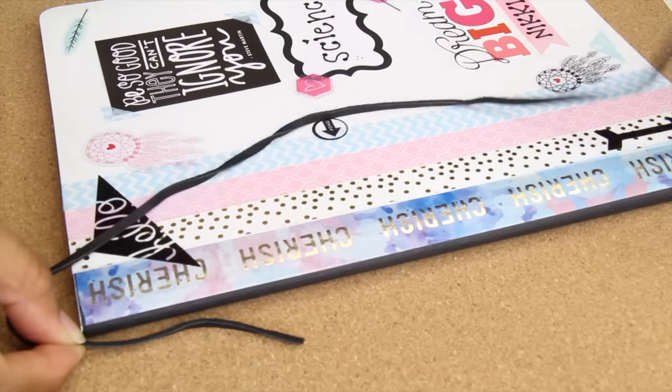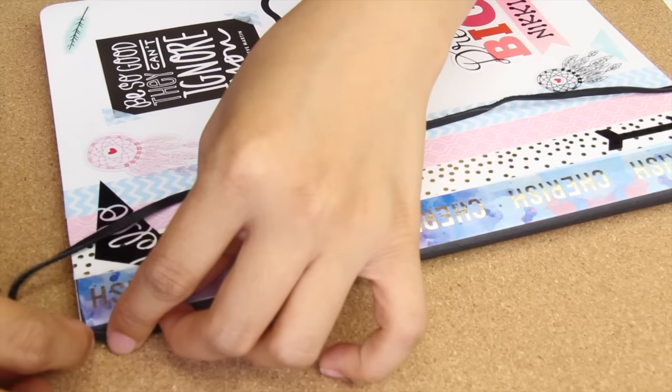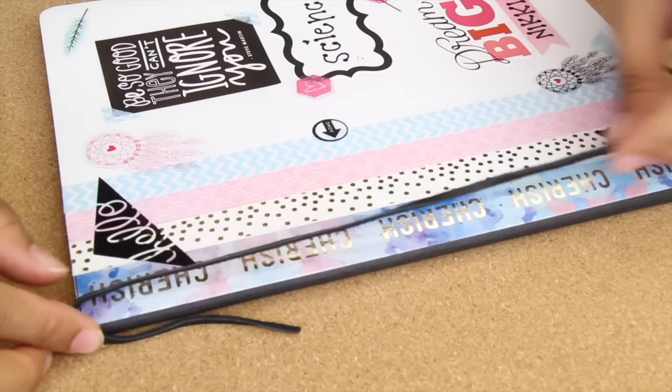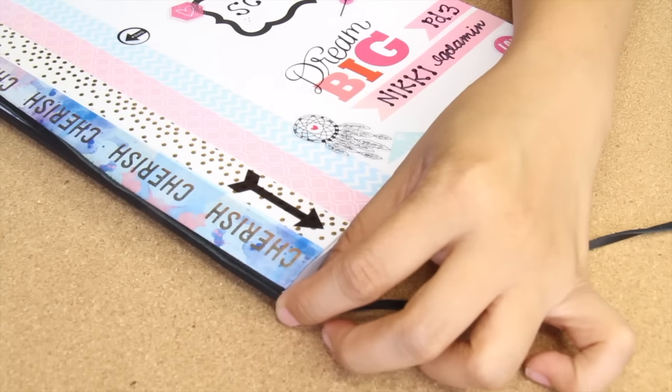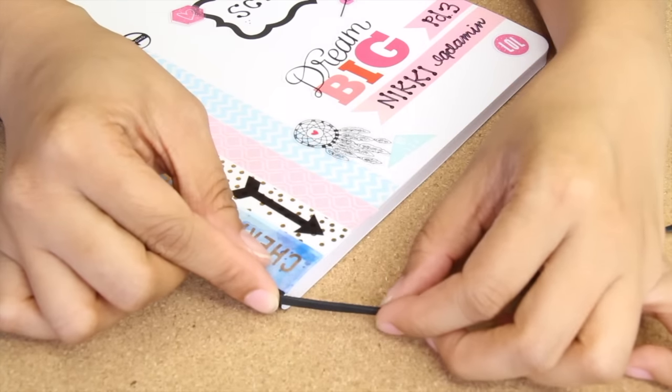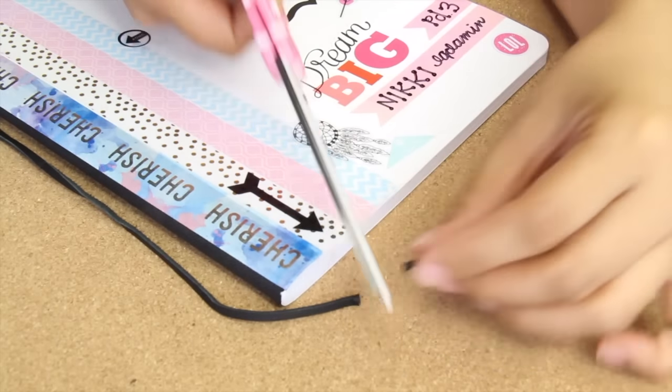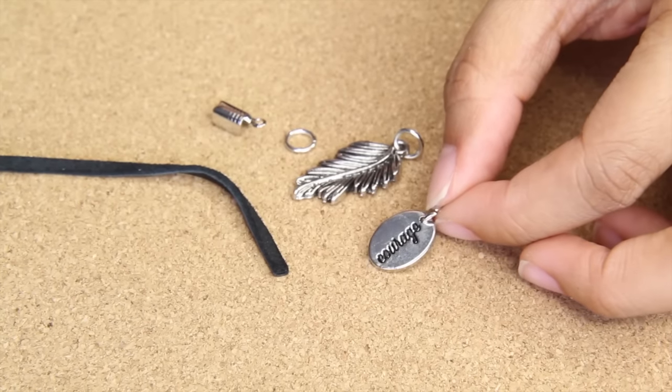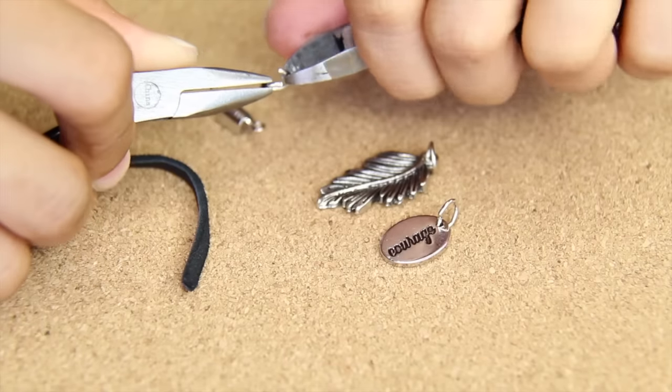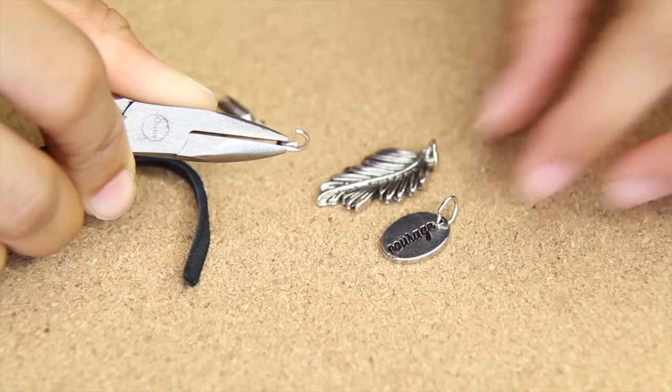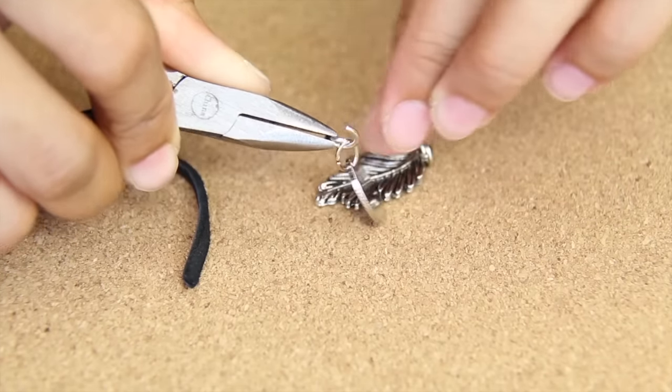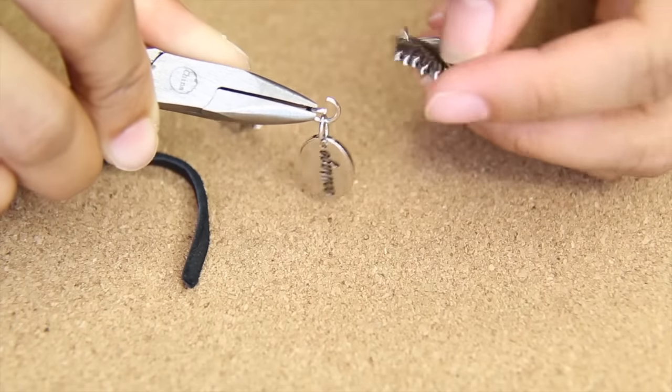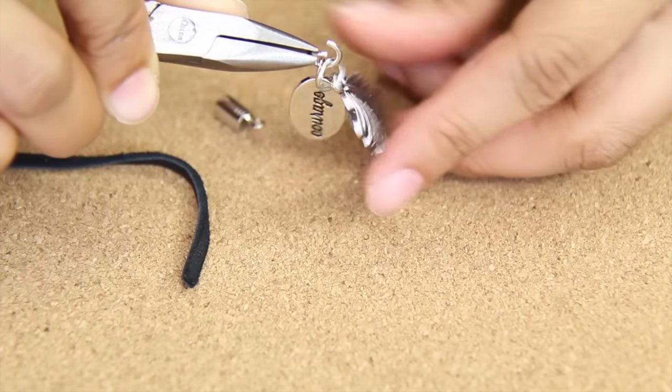Start unraveling your cord, leave about two inches for the spine and then run the cord down the middle of the notebook. Down at the bottom you want to leave about one inch for the charm. Have fun choosing the charms that really describe you - here I have one that says courage and a feather and this just goes with the theme of my notebook. I'm opening up my jump ring and adding the charms first and then my crimping bead.